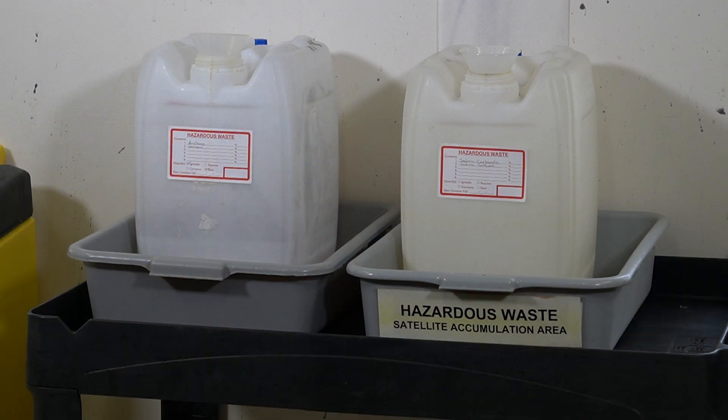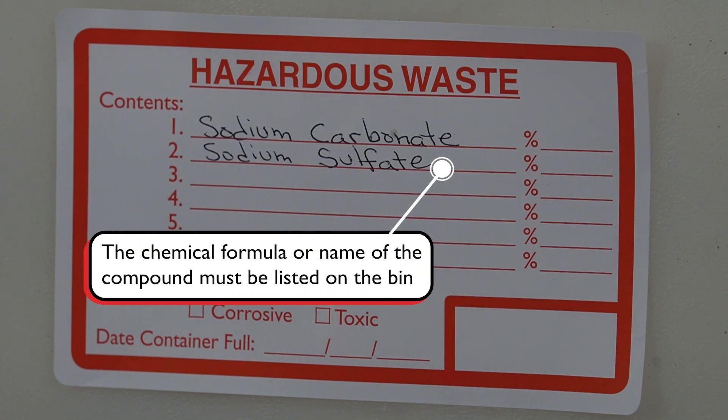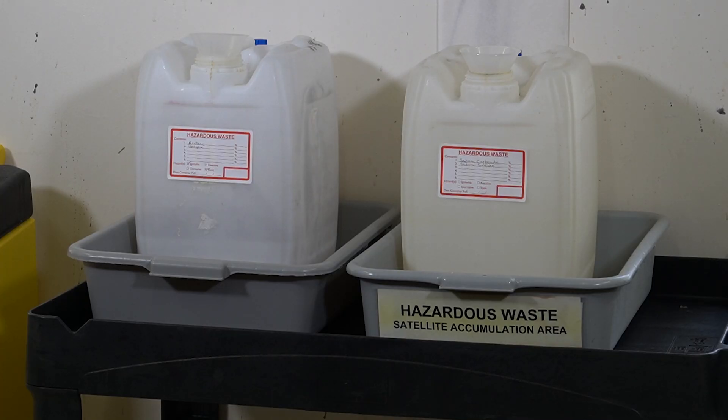In addition to the waste beaker, the large waste container must also be labeled. This label is usually prepared by the lab manager, with the chemical formula of each compound in the waste clearly listed. When emptying your own waste beaker into the large waste bin, you must always read the label first. You do not want to mix incompatible wastes and cause a bad reaction.